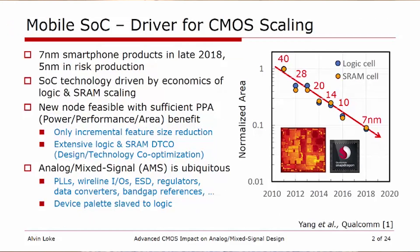The mobile SoC has become the driver for CMOS scaling in recent years. As you can tell from the plot here, Moore's Law is still quite alive and well, with 7nm smartphone products already available in the market as of late 2018, and 5nm smartphone products currently in risk production. SoC technology is driven by the economics of logic and SRAM scaling, and to justify a new node, it needs to offer sufficient power-performance-area benefit.